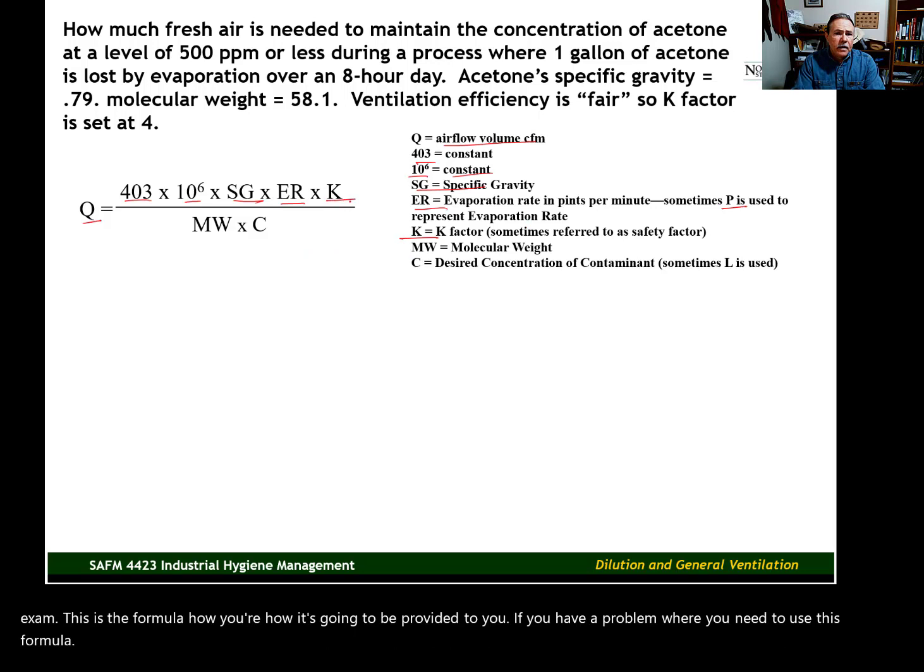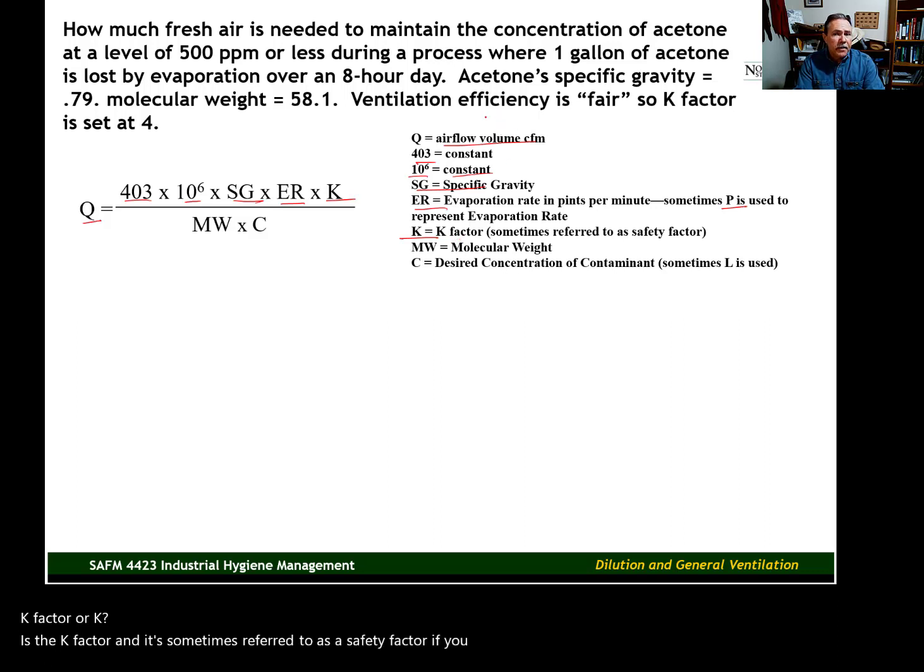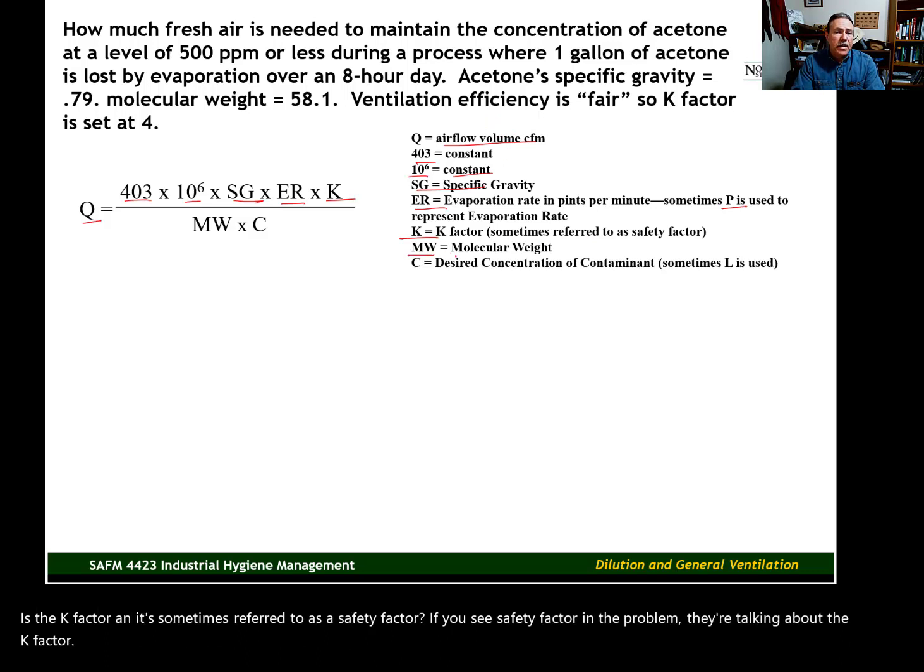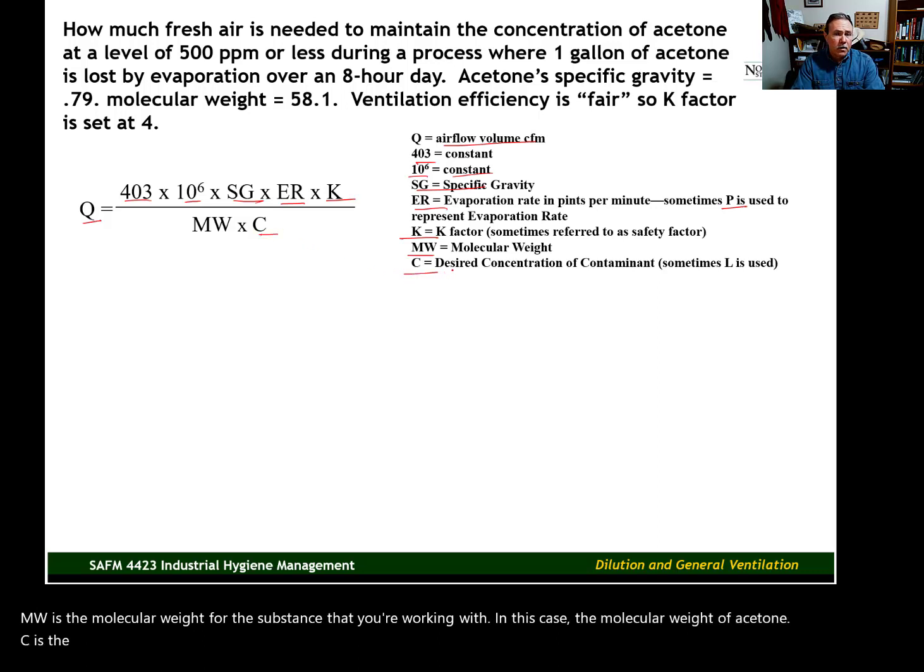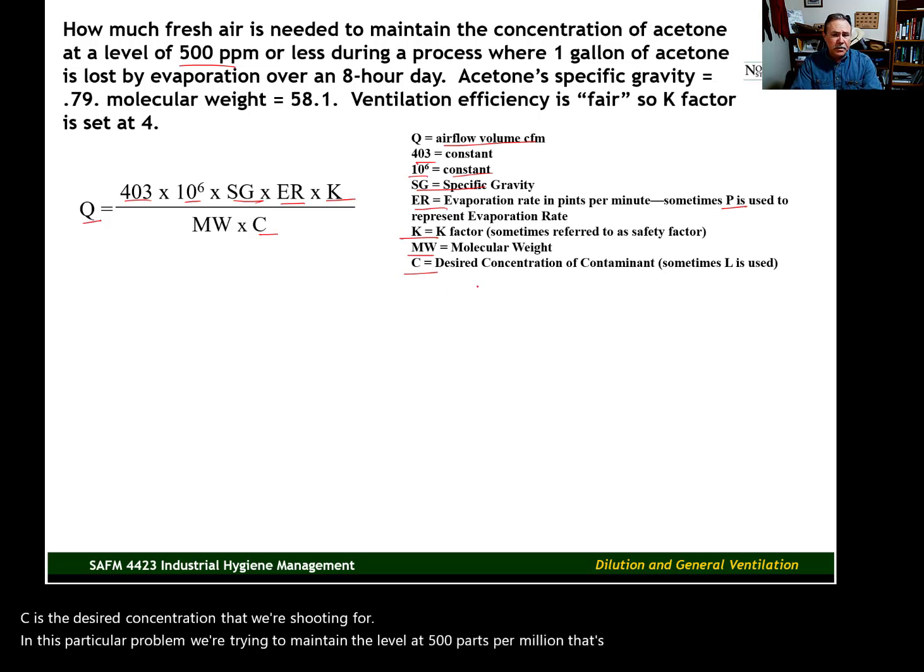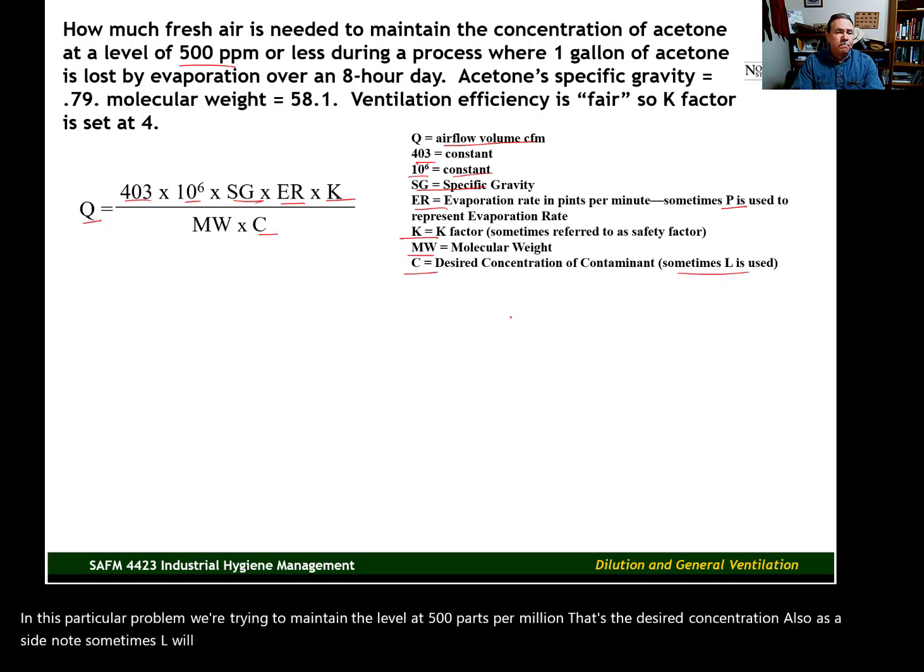K factor, or K, is the K factor, and it's sometimes referred to as a safety factor. If you see safety factor in the problem, they're talking about the K factor. MW is the molecular weight for the substance that you're working with. In this case, the molecular weight of acetone. C is the desired concentration that we're shooting for. In this particular problem, we're trying to maintain the level at 500 parts per million. That's the desired concentration. Also, as a side note, sometimes L will be used in place of C.